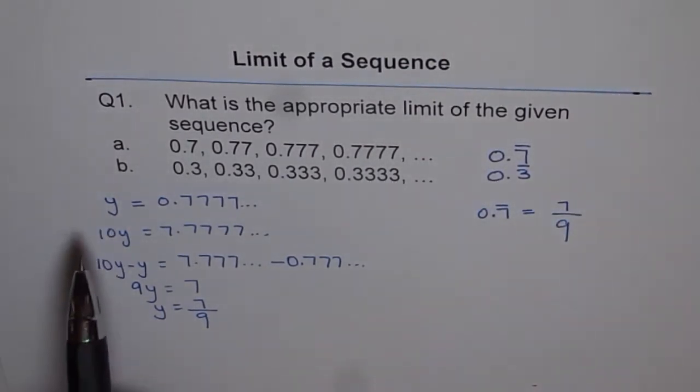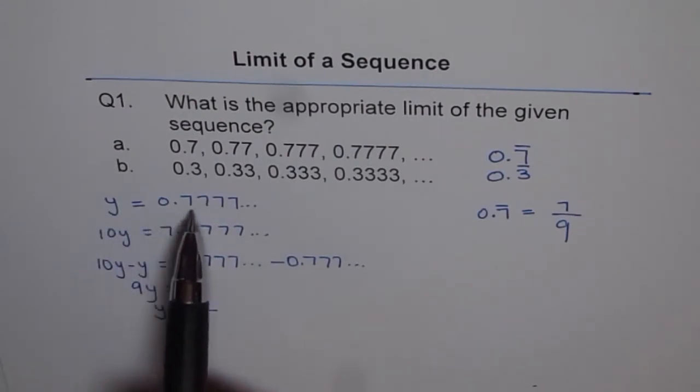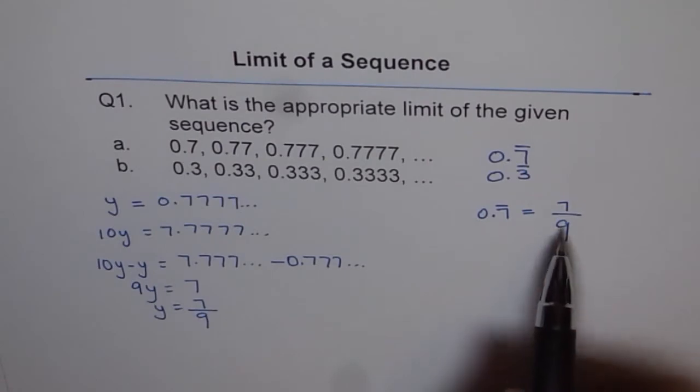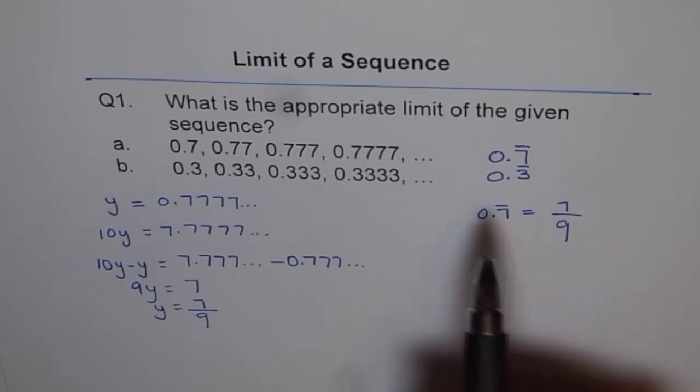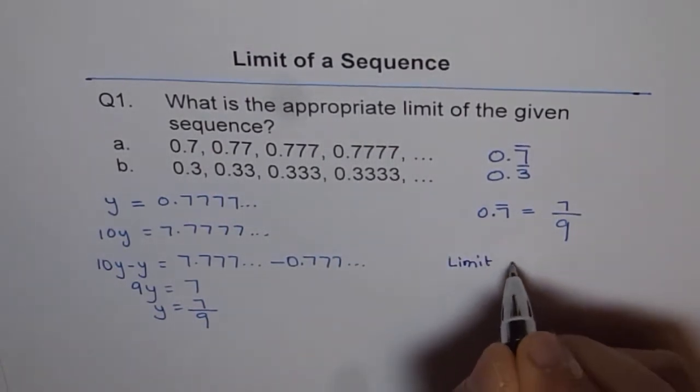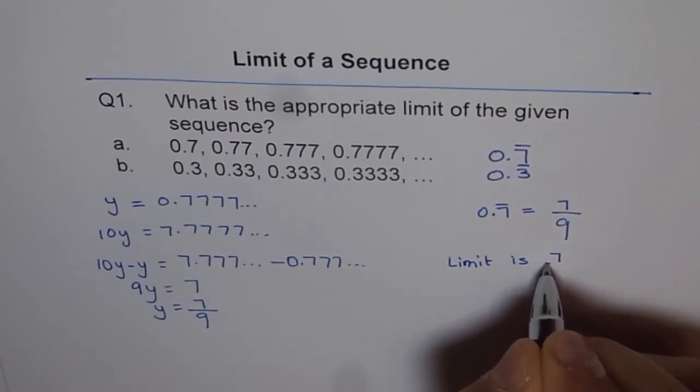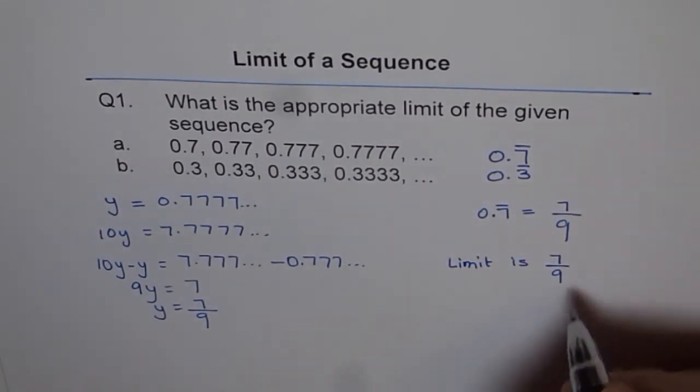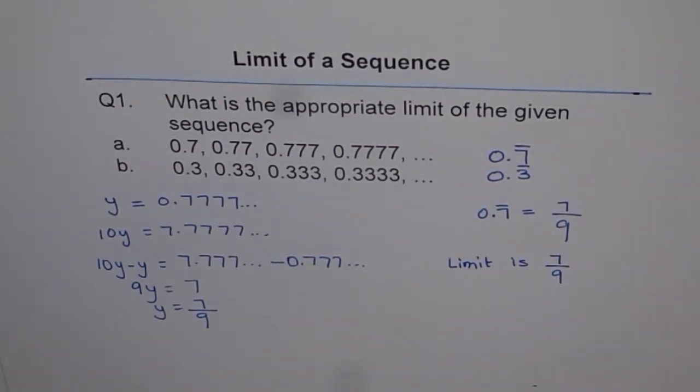This is how we started: y equals 0.7777 recurring. So now we can say that the limit of this sequence is 7 over 9. That is what the limit of the sequence is.